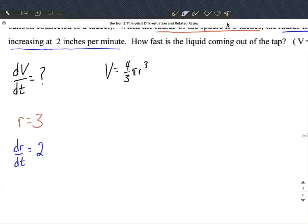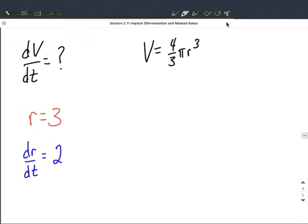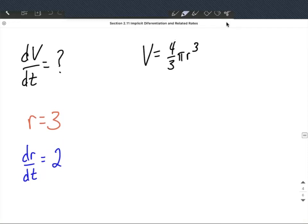Alright, so what we want to do is take the derivative with respect to time of the function they gave us. So in this case we'll take the derivative of V is just 1, but we also need to include a dV/dt next to this, because we're taking the derivative with respect to time.